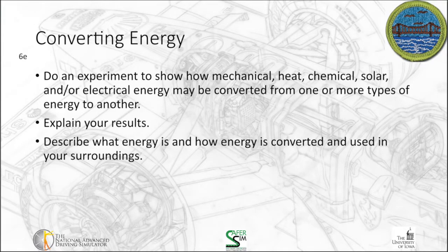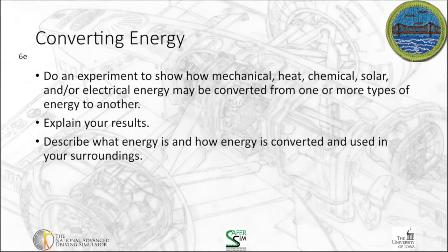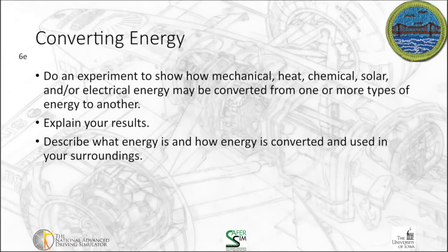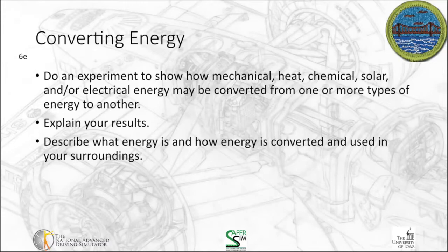Next up is converting energy. For this one, we want you to do an experiment to show how mechanical, heat, chemical, solar, and/or electrical energy may be converted from one or more types of energy to another. Set that experiment up and explain your results. Describe what energy is and how energy is converted and used in your surroundings. When I've gone camping, I've brought a solar charger so I can keep my phone charged without having to carry a fully charged battery pack. There are some options here — I'll leave it to you to figure out which one makes the most sense for your interests, and then document that and your results.